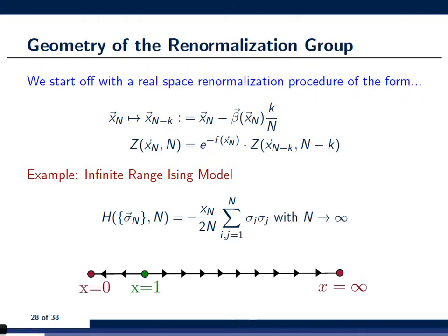Now, the renormalization group flow diagram consists of essentially three fixed points. There's one unstable fixed point at x equals to 1, and there are two stable fixed points at x equals 0, and x equals infinity.